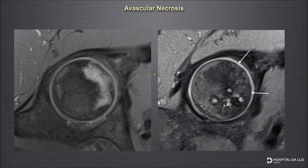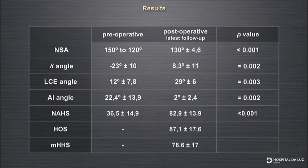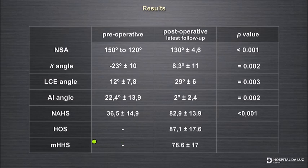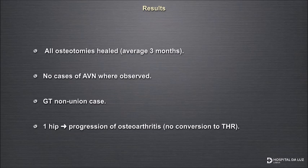Our results show we were able to normalize the neck-shaft angle parameters, the fovea was in a much better position, and acetabular parameters confirmed the PAO effect. Using the Non-Arthritic Hip Score before and after surgery, there was a dramatic increase in hip function, and the Hip Outcome Score also showed acceptable results. All osteotomies healed in three months. We had no cases of AVN, one case of greater trochanter non-union requiring further surgery, and one hip with the longest follow-up progressed to osteoarthritis, but so far no conversion to total hip replacement.